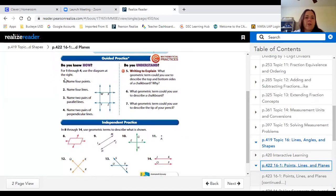So for number one, it says name four points. So you would just put point W, point X, point Y, and point Z. And then to name four lines...